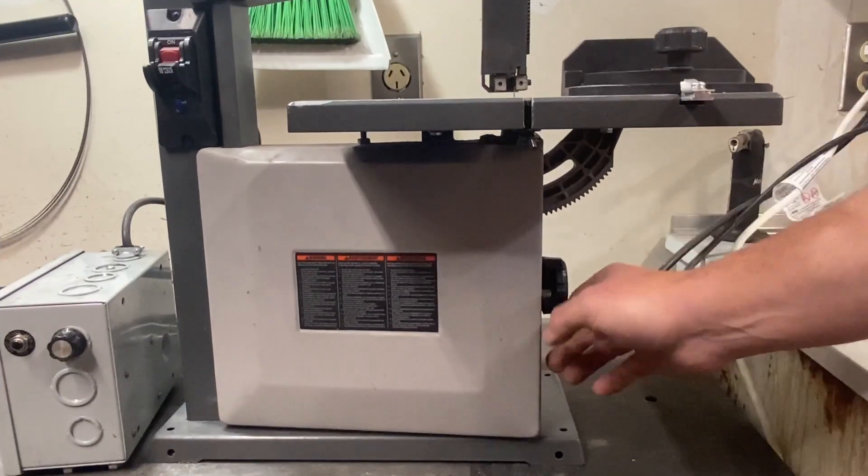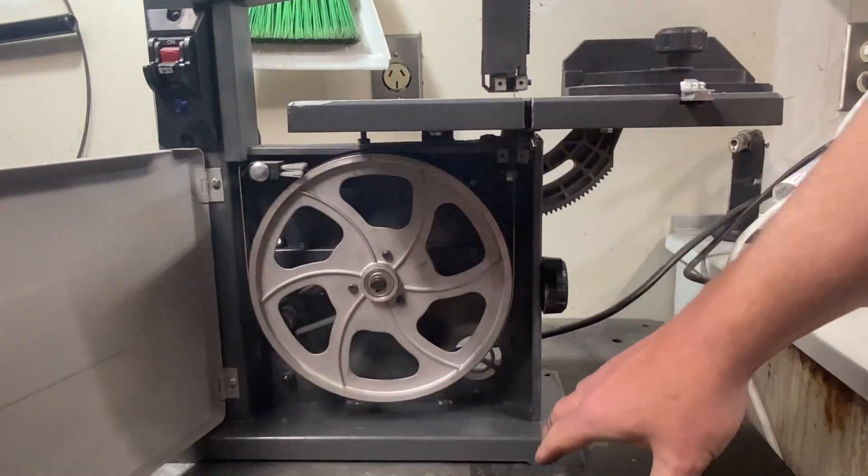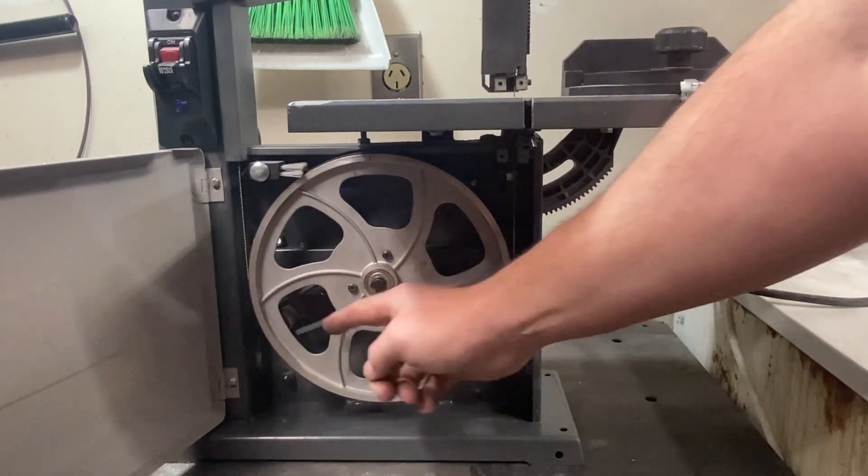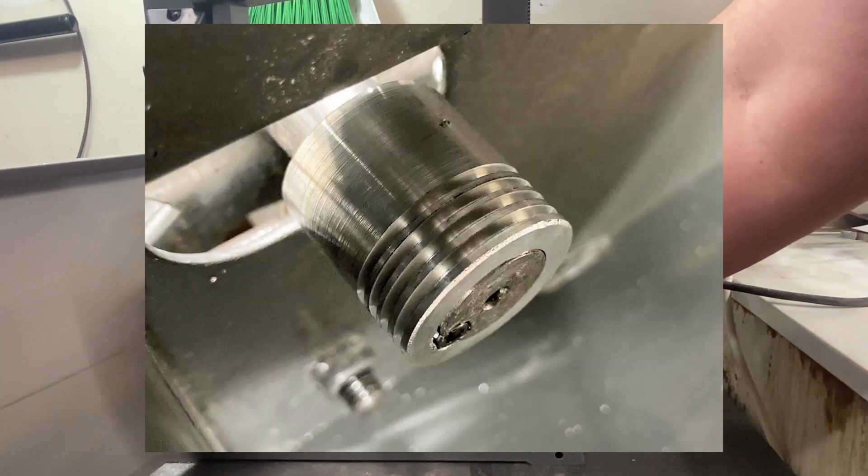Under here, not a lot of modification going on there. This is the original wheel. Everything fits like it's supposed to and then inside there is a custom pulley that I made on my lathe.